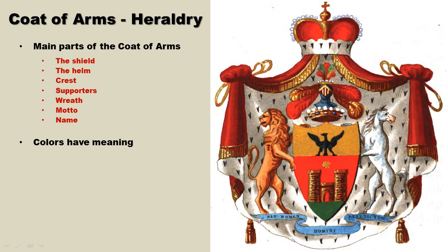Imagine you are a knight in the heat of battle, fighting other knights. With all of that armor on, how would you know if that particular knight is your enemy or friend? What is not in doubt is that coats of arms were and still are a major status symbol — a symbol of power and prestige. They were also used in tournaments as well.